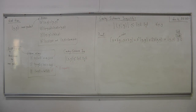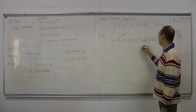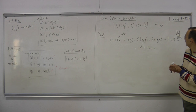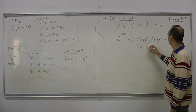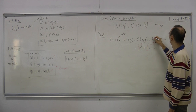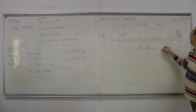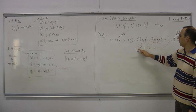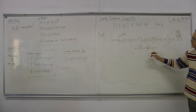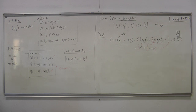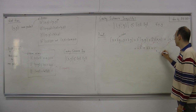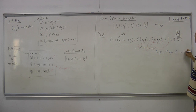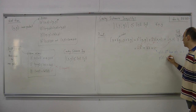This gives us something of the form aλ² + bλ + c, where a = ⟨x, x⟩, b = 2⟨x, y⟩, and c = ⟨y, y⟩. This is a second-degree polynomial p(λ) in lambda, and we know p(λ) ≥ 0 for all lambda.